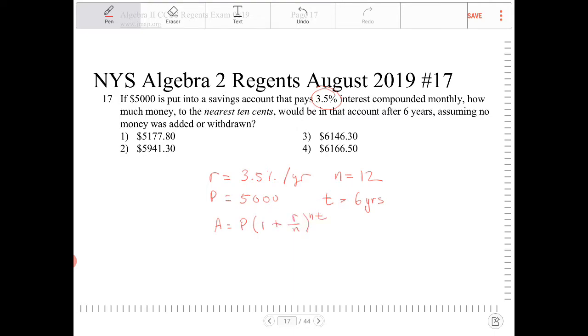So we're going to substitute in. We're going to replace P with $5,000, 1 plus the interest rate is 3.5%, so it's 0.035. The frequency of compounding is 12. T is 6 years. Multiply that by 12. And we're going to enter this into the calculator.